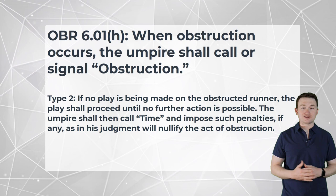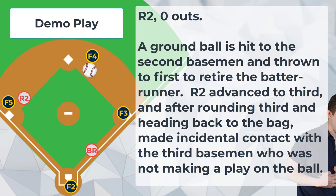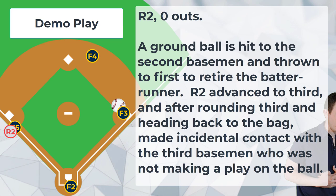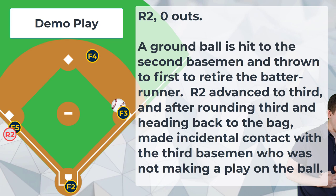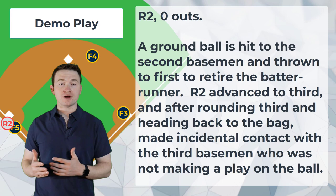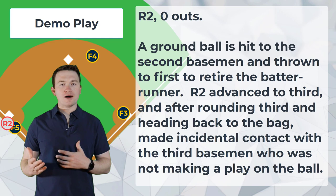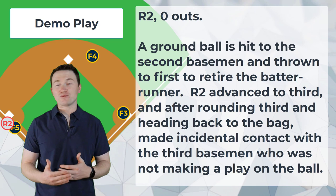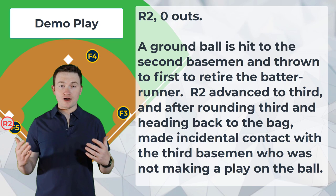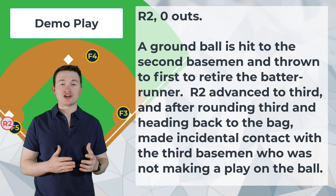For example, let's look at this play: R2, no outs. A ground ball is hit to the second baseman and thrown to first to retire the batter-runner. R2 advances to third, and after rounding third and heading back to the bag, makes incidental contact with the third baseman who was not making a play on the ball. In OBR, since the third baseman isn't making a play on the ball, it would be obstruction. But because this was a ground out on the right side of the infield, we know the runner from second was not going to make it home and there's not a play being attempted on them at third. Thus, under OBR, we can use Type 2 obstruction and ultimately just leave the runner at third base — nullifying the obstruction in a way that keeps the game fair.